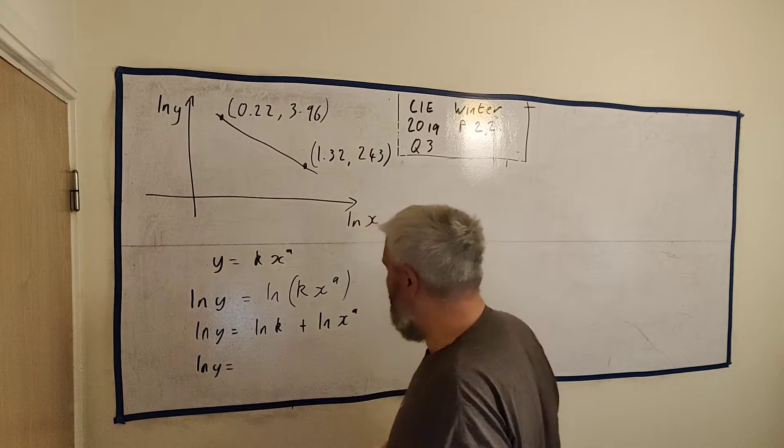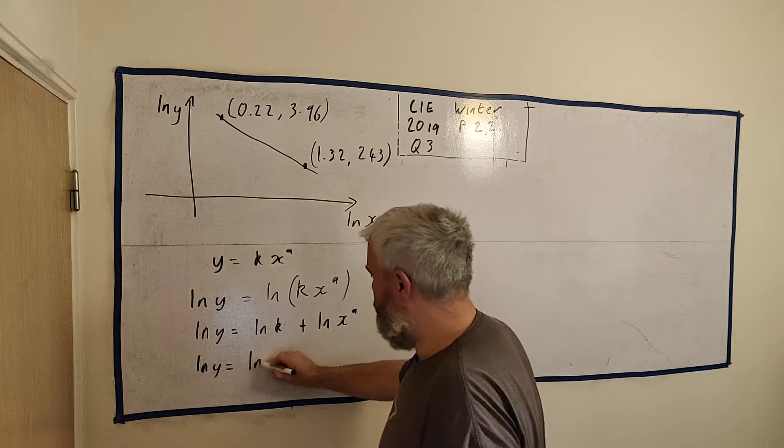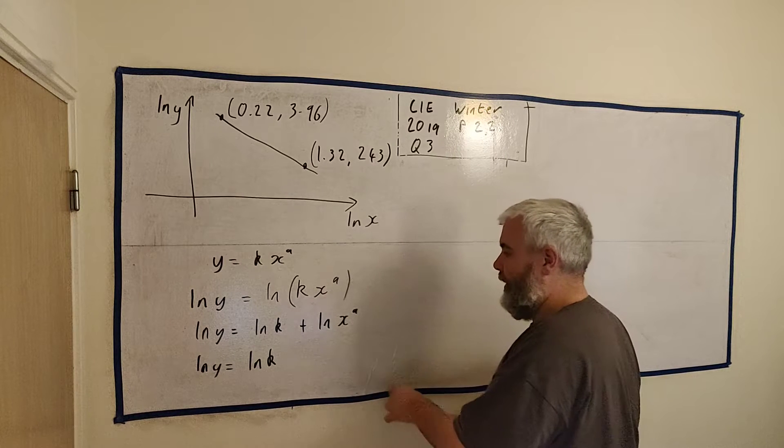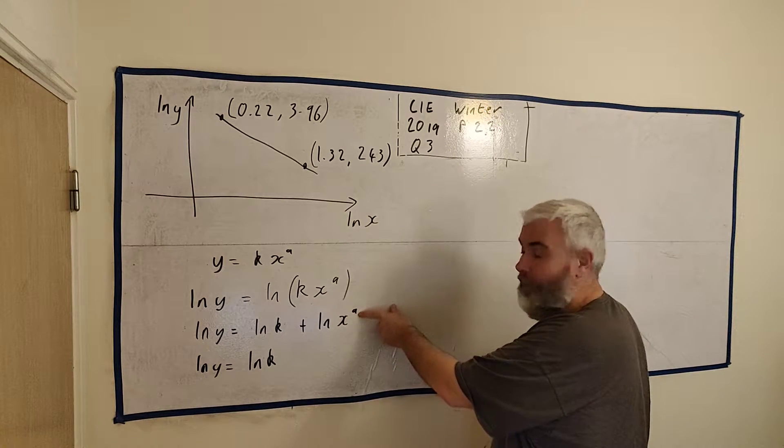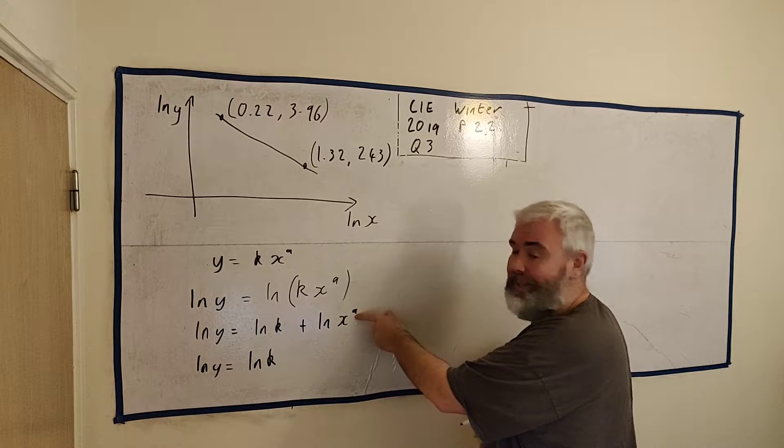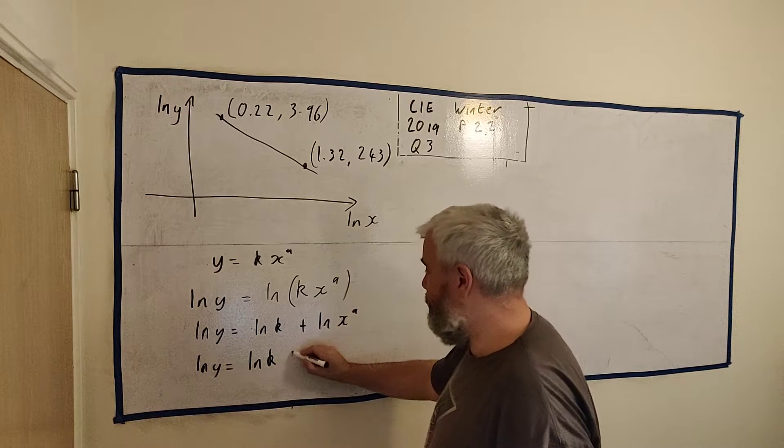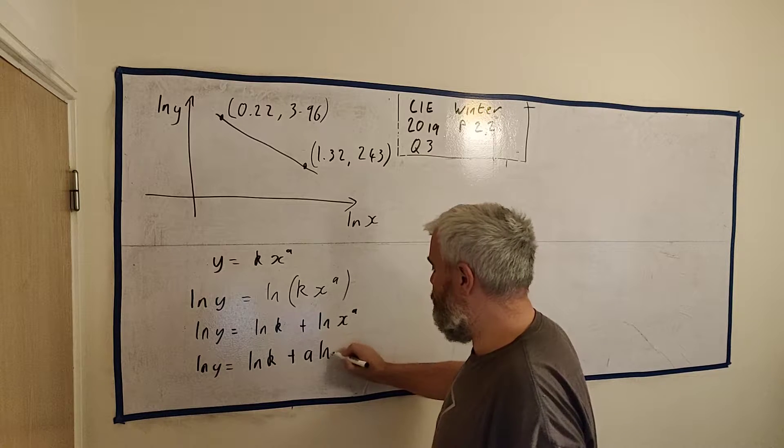And then one last thing we can do. Natural log or any log of something to the power of something, this power can come down and multiply. So plus a natural log x. This is all just our standard rules from natural log.